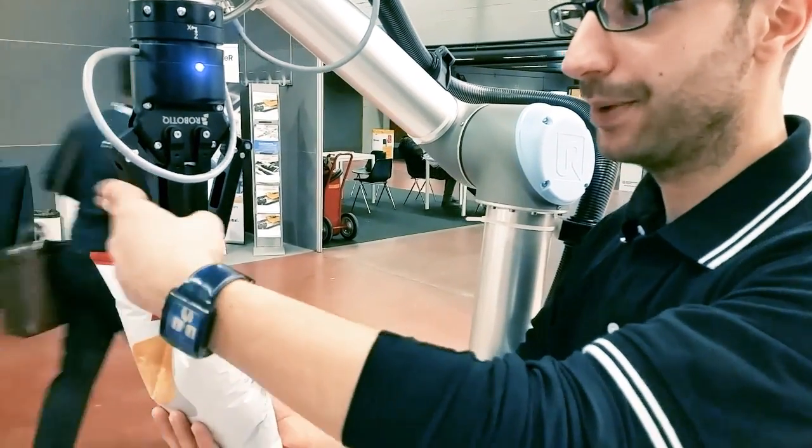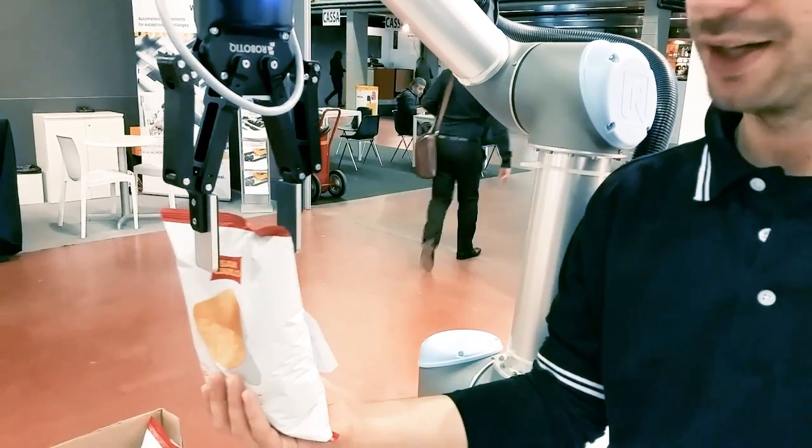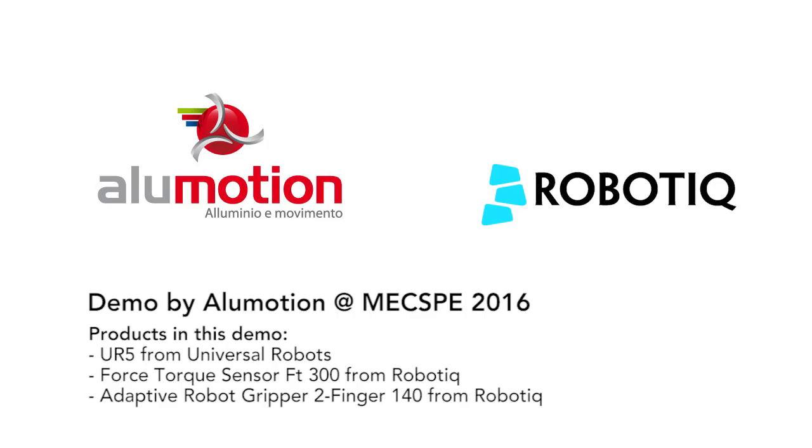Now, again, double tap, and the robot gripper opens.